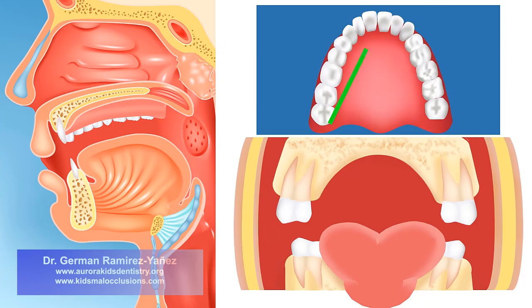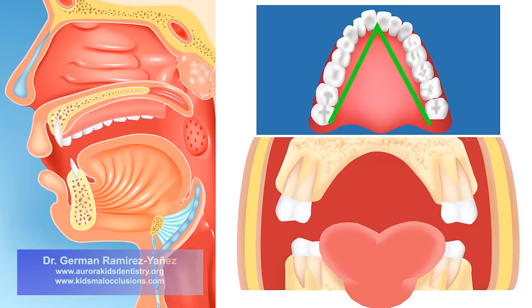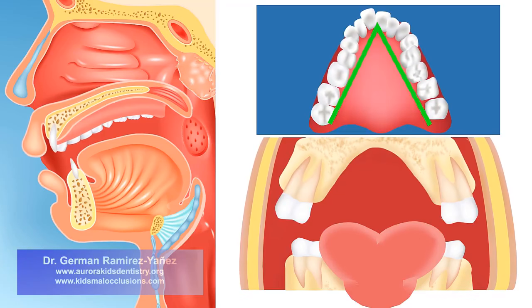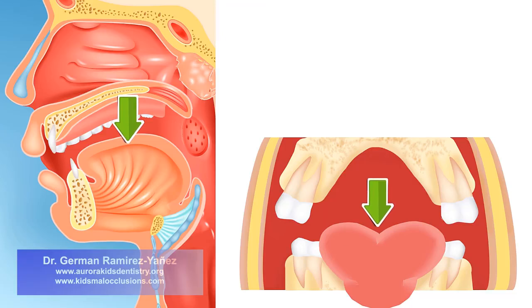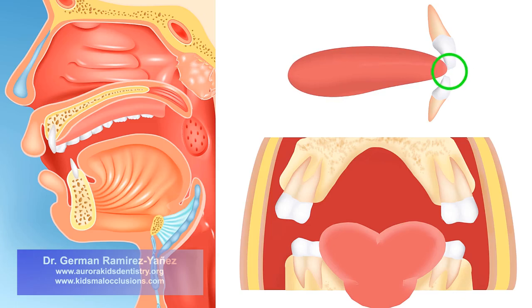The upper dental arch acquires a V-shape instead of being a rounded dental arch. Therefore, your teeth do not have space to properly align. This also produces an incorrect swallowing function. Every time you swallow — between 1,600 to 2,400 times per day — the tongue positions low, staying away from your palate. That forces the tip of your tongue to position between your upper and lower front teeth.